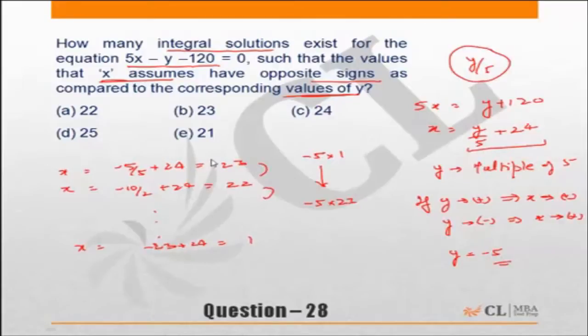So how many possible answers are there? From 1 to 23, there are 23 pairs possible. Correct answer is choice B.